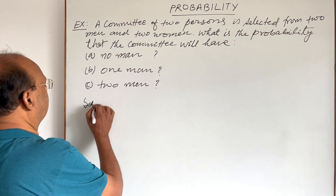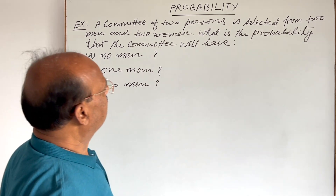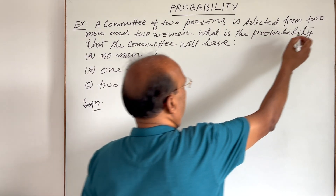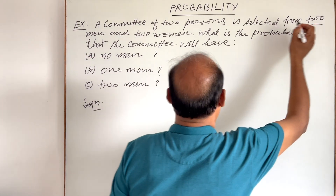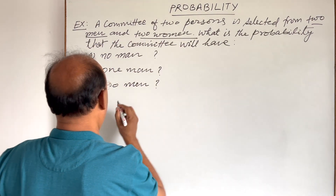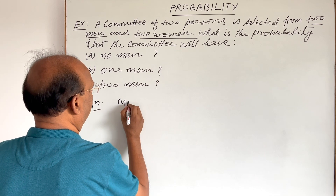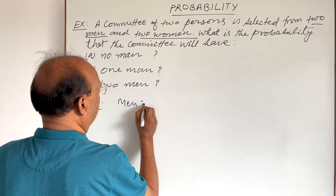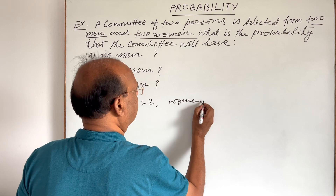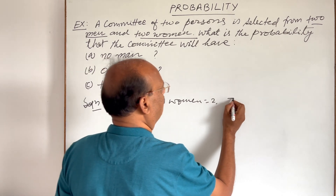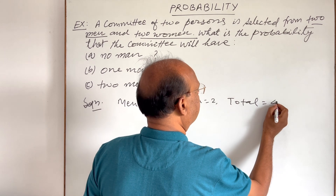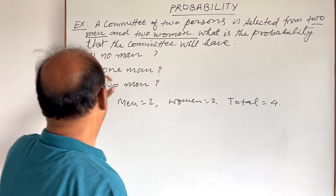We are given that there are two men and two women. So number of men is 2 and number of women is 2, so total is 2 plus 2, that is 4.